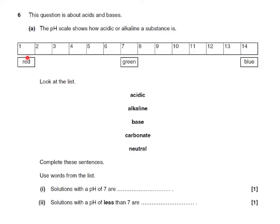Look at the list and complete these sentences using words from the list. Solutions with a pH of 7 are, well the answer to this one would be neutral. And solutions with a pH of less than 7 would be acidic.